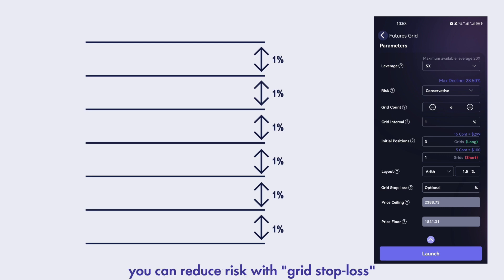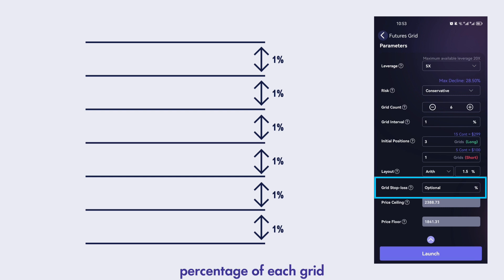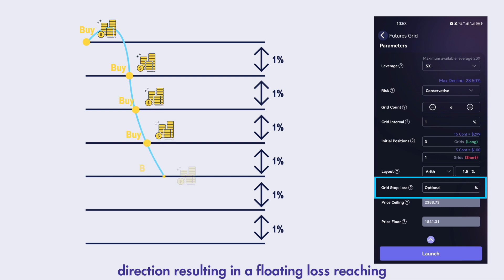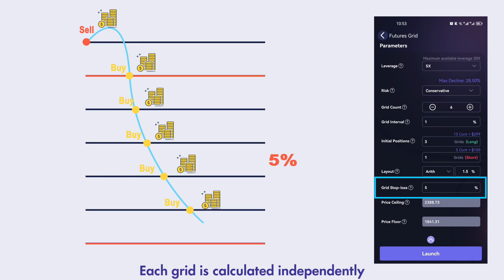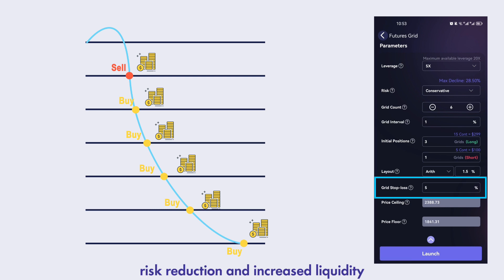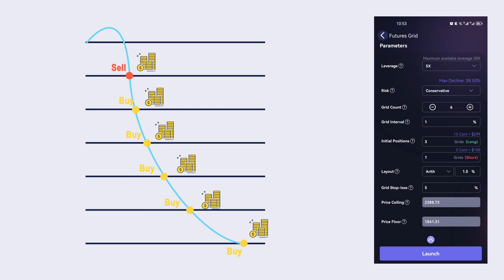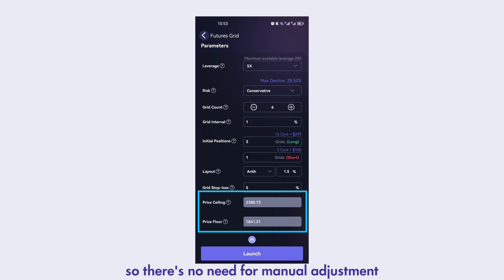In uncertain markets, you can reduce risk with grid stop loss. It will progressively close the grids based on the loss percentage of each grid. If the price continues to move in an unfavorable direction, resulting in a floating loss reaching — for example — 5%, that grid will be closed. Each grid is calculated independently, allowing for flexible fund allocation, risk reduction, and increased liquidity. Price ceiling and price floor are automatically calculated based on the parameters you have set, so there's no need for manual adjustment.